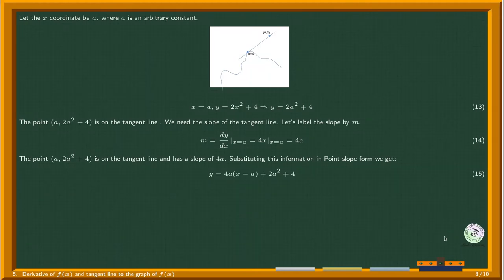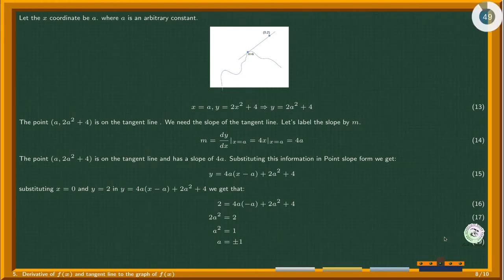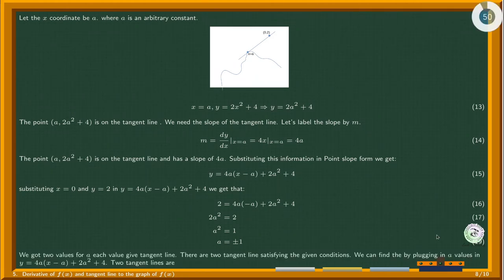If we can find the value of the arbitrary constant A, we get the equation of the tangent line. To find A, we can construct an equation by using the fact the tangent line passes through (0, 2). The point (0, 2) should satisfy the equation of the tangent line. Therefore we get an equation. We got two values for A. Each value gives a tangent line. Two tangent lines satisfy the given conditions.